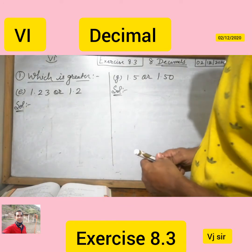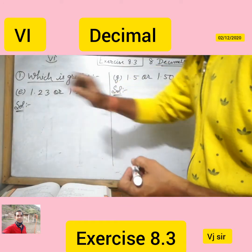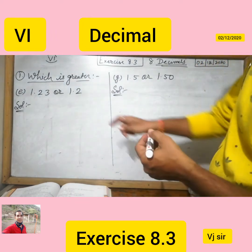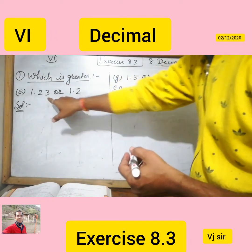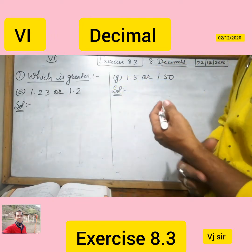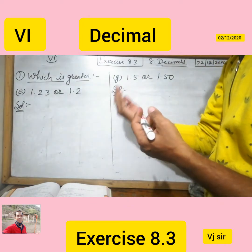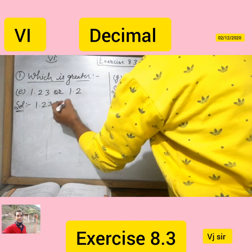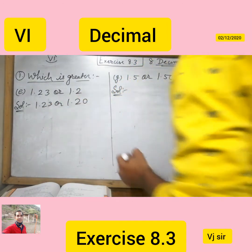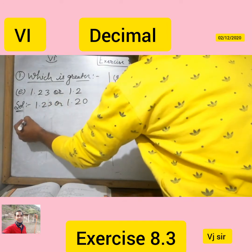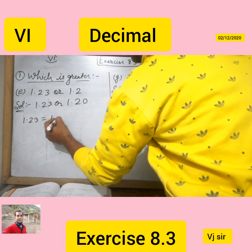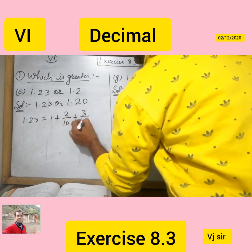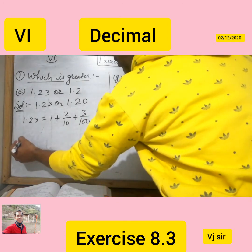Now we move to question e: is 1.23 greater or 1.2? First, we will make the equal number of digits after the decimal, so our numbers become 1.23 and 1.20. We can express 1.23 as 1 plus 2 upon 10 plus 3 upon 100.